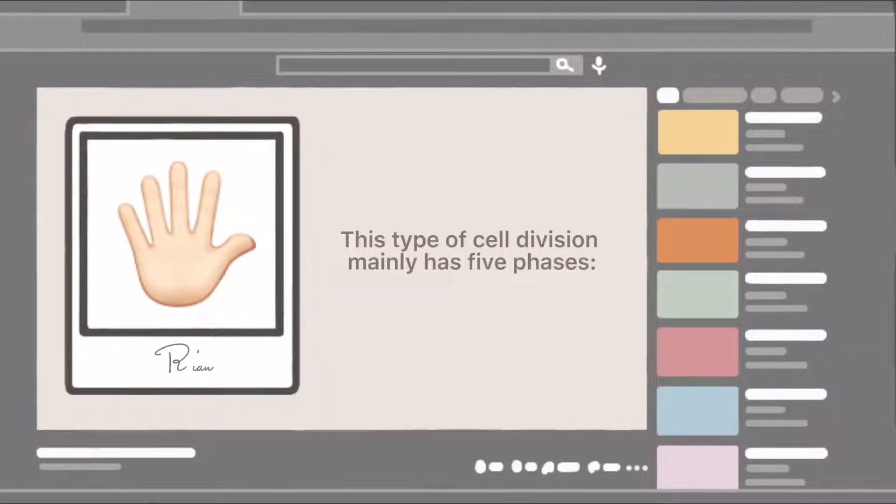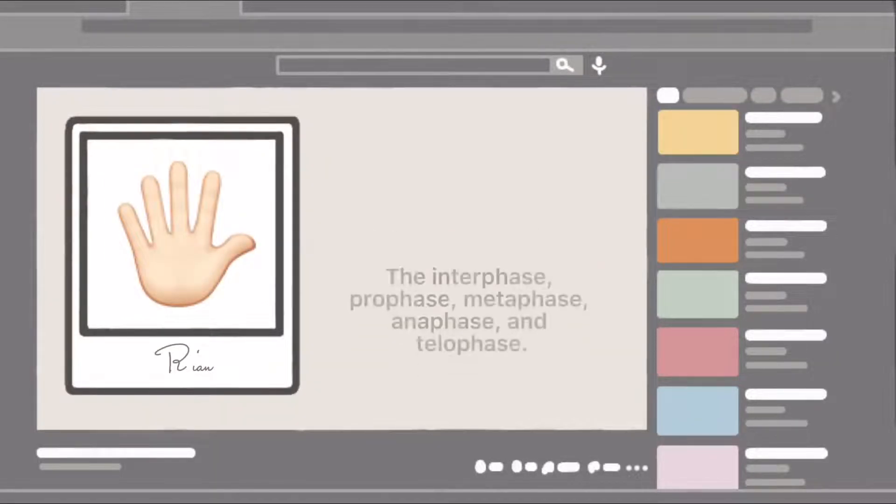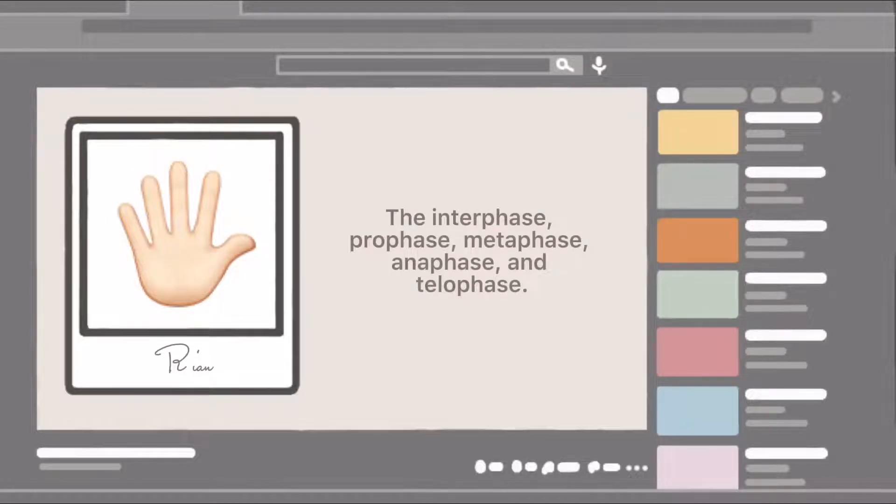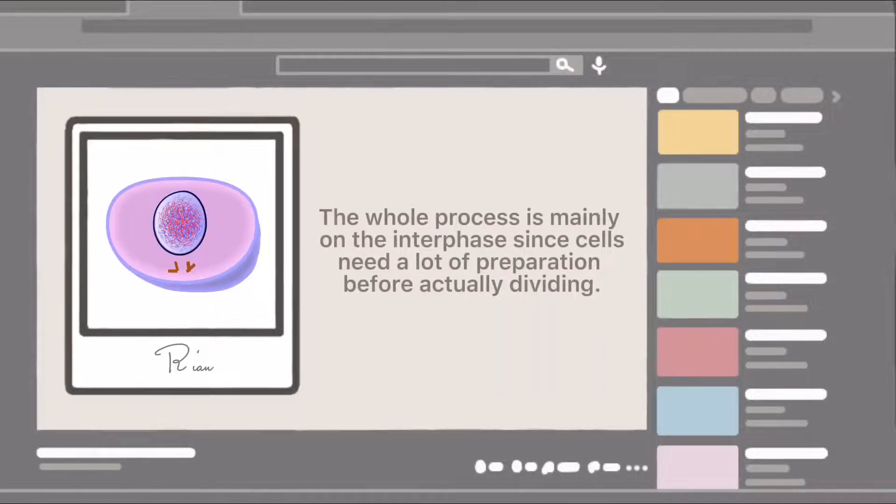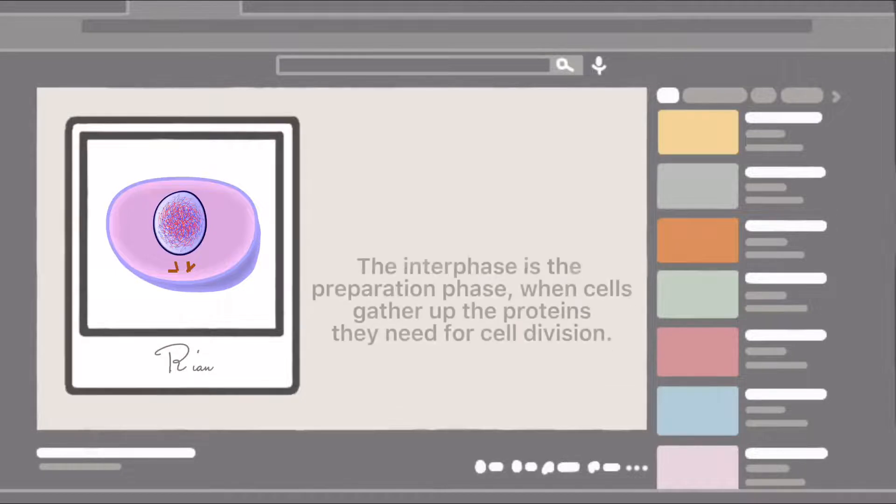This type of cell division mainly has five phases: the interphase, prophase, metaphase, anaphase, and telophase, or in short IPMAT. The whole process is mainly on the interphase since cells did a lot of preparation before actually dividing. The interphase is the preparation phase when cells gather up the proteins they need for cell division.